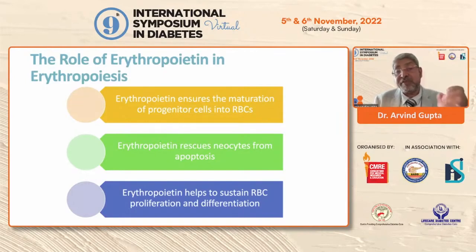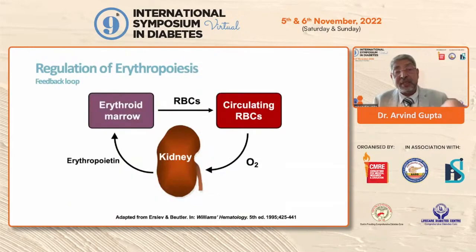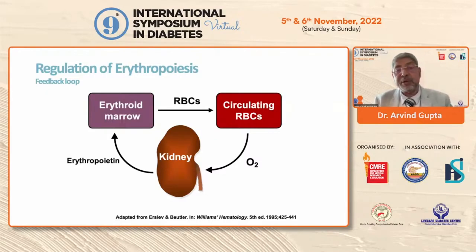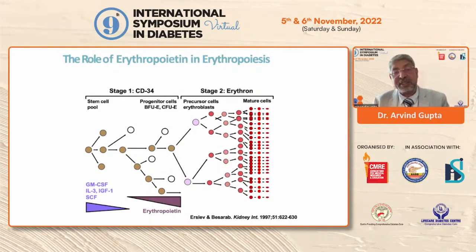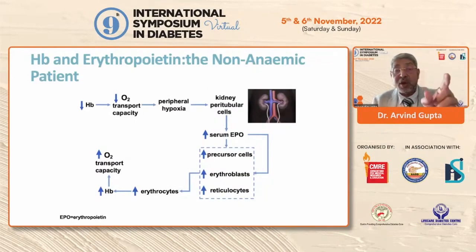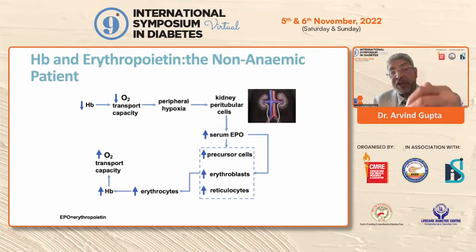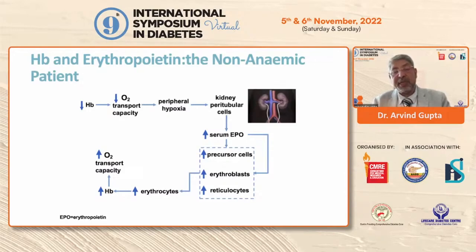Erythropoietin ensures the maturation of progeny. Proerythropoietin rescues neocytes from apoptosis, and erythropoietin helps sustain RBC proliferation and differentiation. The erythroid marrow produces circulating RBCs which carry oxygen through the kidney. Erythropoietin then stimulates the erythroid marrow to produce more RBCs. When hemoglobin is low, peripheral hypoxia occurs, the kidney responds by increasing erythropoietin, increasing precursor cells, erythroblasts, reticulocytes, and ultimately erythrocytes, raising hemoglobin and oxygen transport.